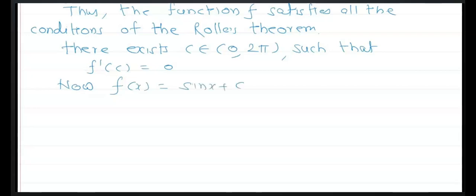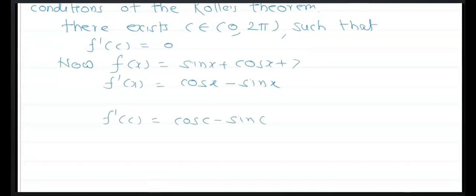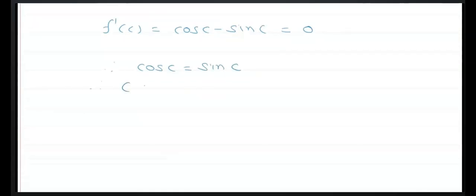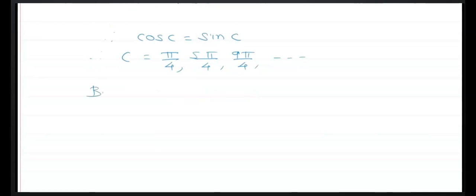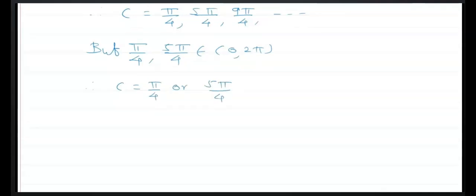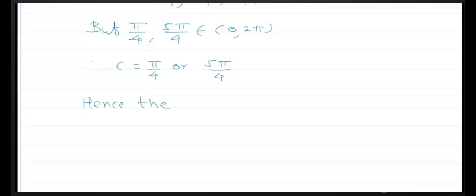f'(x) = cos x - sin x. Setting f'(c) = 0 gives cos c = sin c. This holds when c = π/4, 5π/4, 9π/4. The values that belong to (0, 2π) are c = π/4 or c = 5π/4. Hence Rolle's theorem is verified.